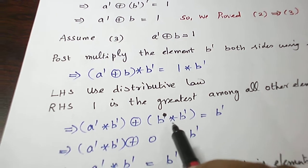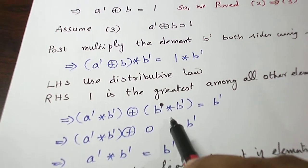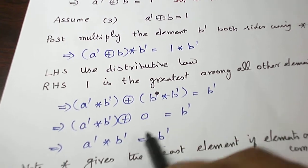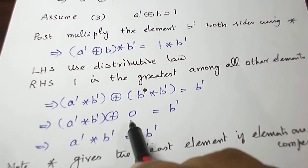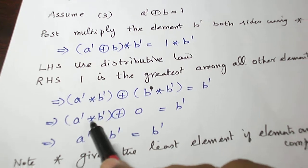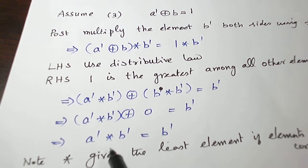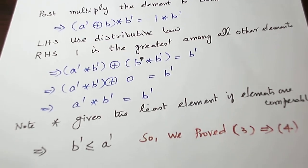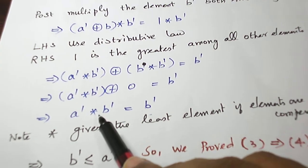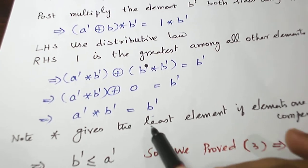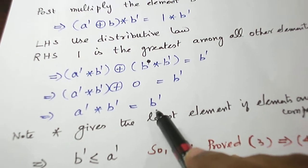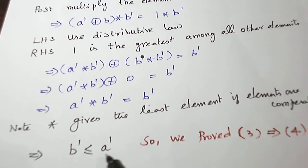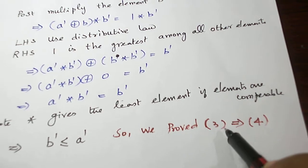Now, star between an element and its complement is 0, so B star B dash equals 0. Therefore A dash star B dash plus 0 equals B dash. Since 0 is the least element, plus gives the greater among the two, so A dash star B dash is greater than 0, and A dash star B dash equals B dash. Since star gives the least among two elements, B dash is the smaller and A dash is automatically larger. So we have B dash less than or equal to A dash, proving 3 implies 4.